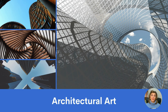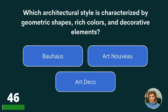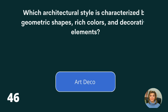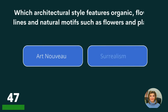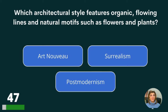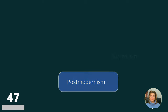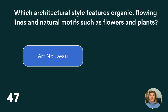Let's move on to Architectural Art. Which architectural style is characterized by geometric shapes, rich colors, and decorative elements? Bauhaus, Art Nouveau, or Art Deco? The answer is Art Deco. Which architectural style features organic flowing lines and natural motifs, such as flowers and plants? Art Nouveau, Surrealism, or Postmodernism? The answer is Art Nouveau.